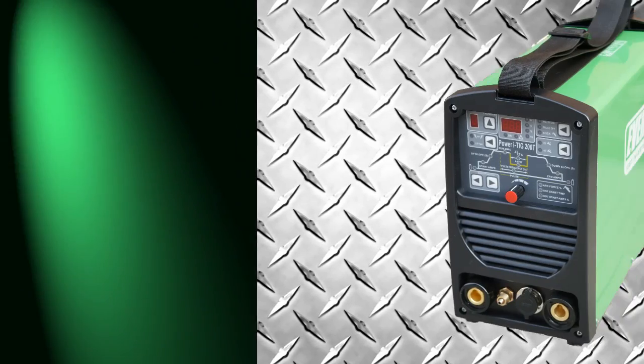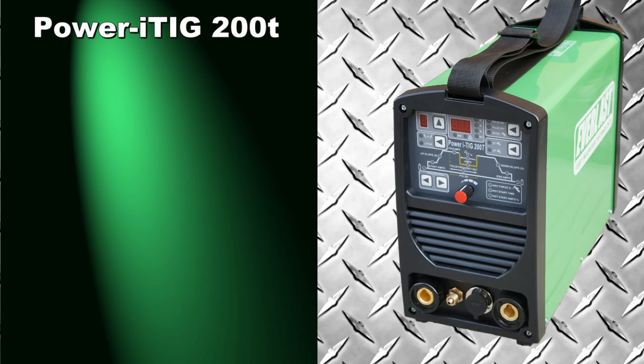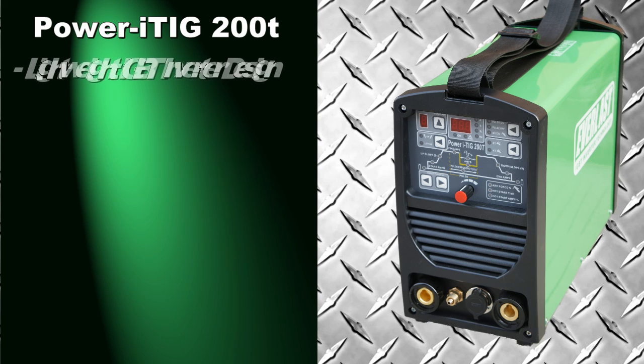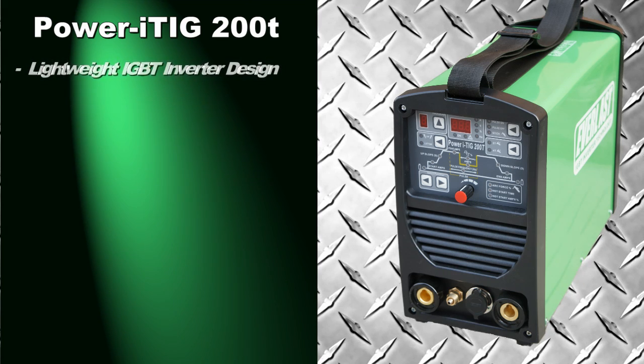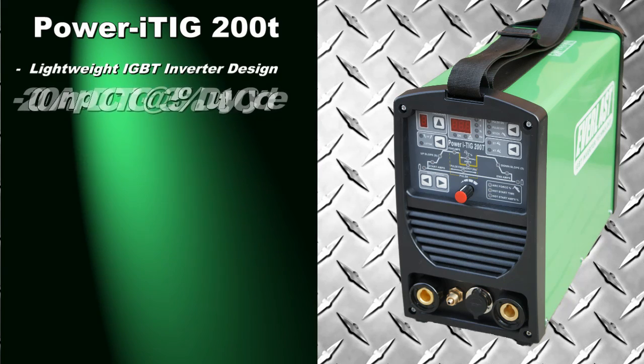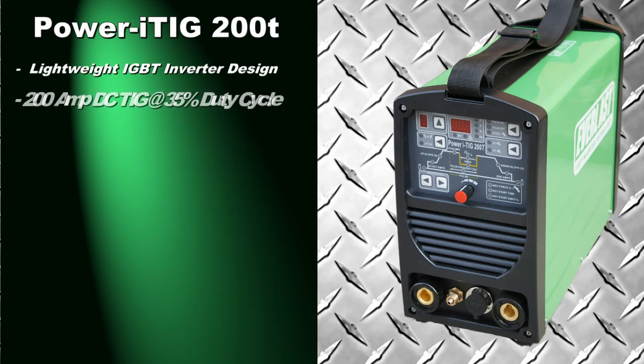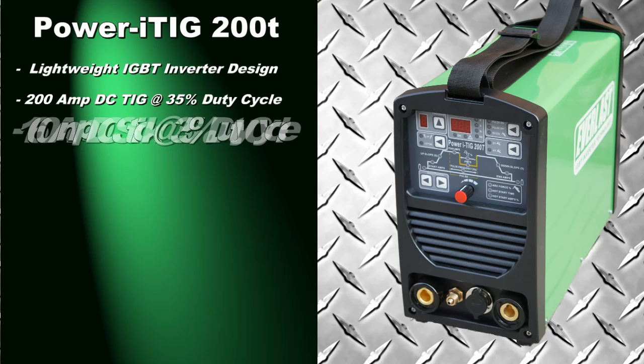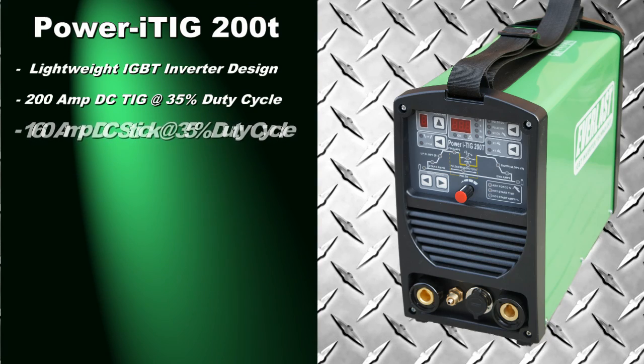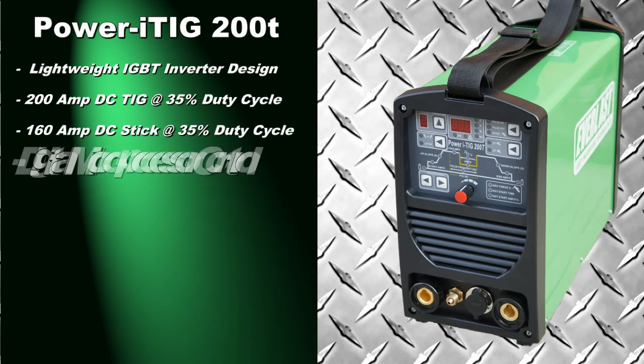The iTIG 200T is among the lightest in its class with an IGBT inverter design that gives excellent arc stability. It features 200 amps maximum output at 35% duty cycle on DC TIG and puts out 160 amps at 35% duty cycle on DC stick.